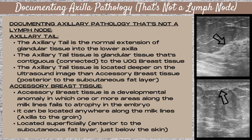First, a little anatomy review. The axillary tail is the normal extension of glandular tissue into the lower axilla. The axillary tail tissue is glandular tissue that's contiguous — connected to the upper outer quadrant breast tissue. It is located deeper on the ultrasound image than accessory breast tissue, and it is located posterior to the subcutaneous fat layer.